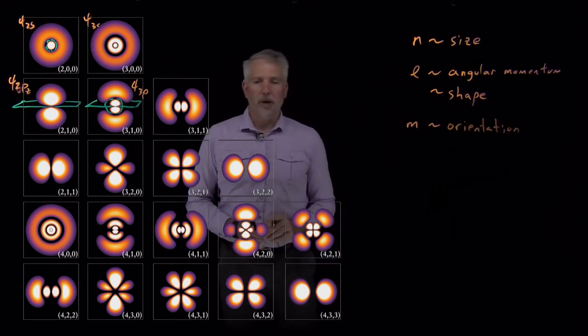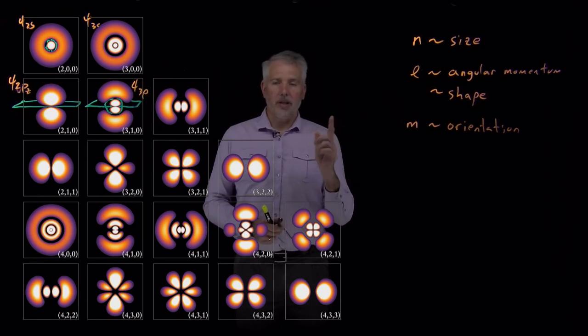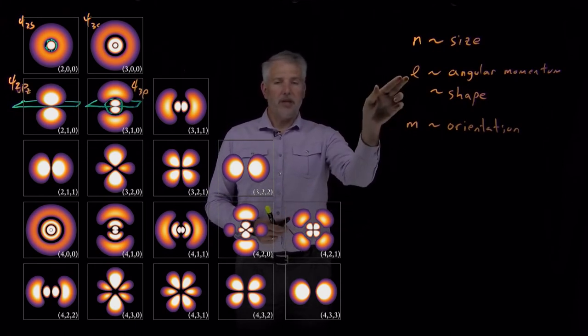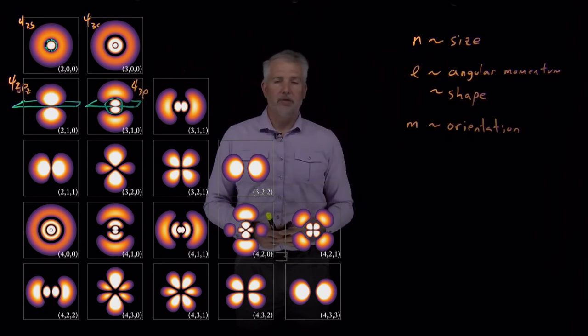Likewise, the 2px, 2py, 2pz orbitals differ primarily in the direction in which they point. So m is telling us the orientation, l the shape of the orbital, and n the relative size of the orbital.